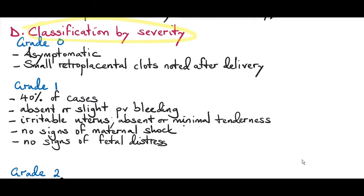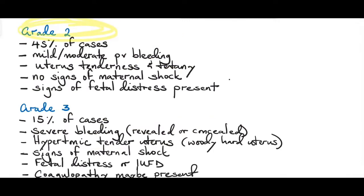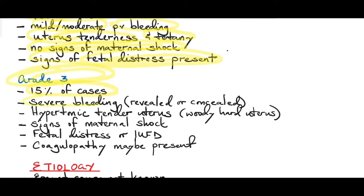Classification by severity according to clinical presentation: Grade 1 occurs in 40 percent of cases — the patient is asymptomatic with small retroplacental clots noted after delivery, absent or slight pervaginal bleeding, an irritable uterus, absent or minimal uterine tenderness, and no signs of maternal shock or fetal distress. Grade 2 occurs in 45 percent of cases — there is mild or moderate pervaginal bleeding, uterine tenderness and tetany, no signs of maternal shock, but signs of fetal distress may be present. Grade 3 occurs in 15 percent of cases — there is severe bleeding (revealed or concealed), a hypertonic tender woody-hard uterus, signs of maternal shock, possible fetal distress or intrauterine fetal demise, and coagulopathy may be present in about 30 percent of cases.